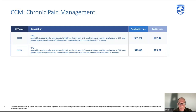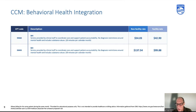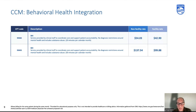Behavioral health integration is also now recognized within this family of codes. BHI services are provided by clinical staff to coordinate care and support patient accountability. The keyword to look for in these code sets is 'clinical staff,' which lends to general supervision and third-party contracts. It's nice to see the chronic pain management codes come through — they did not exist until just a couple of years ago.